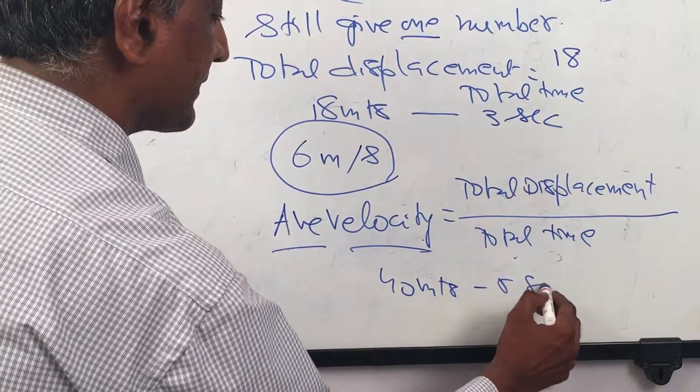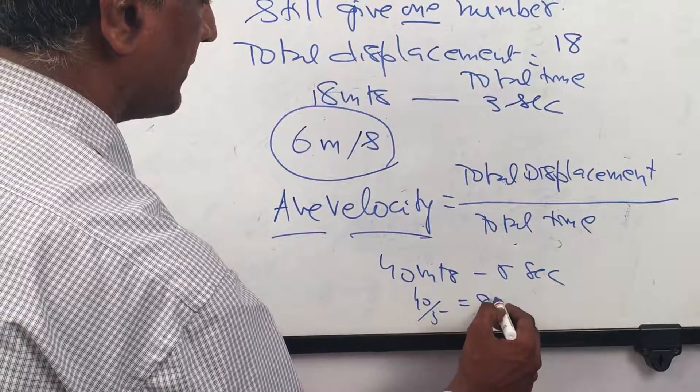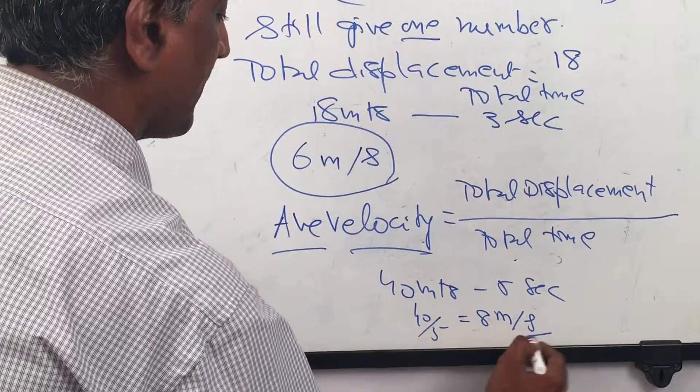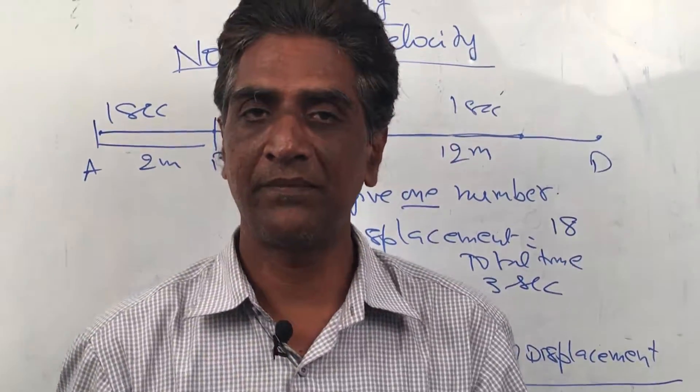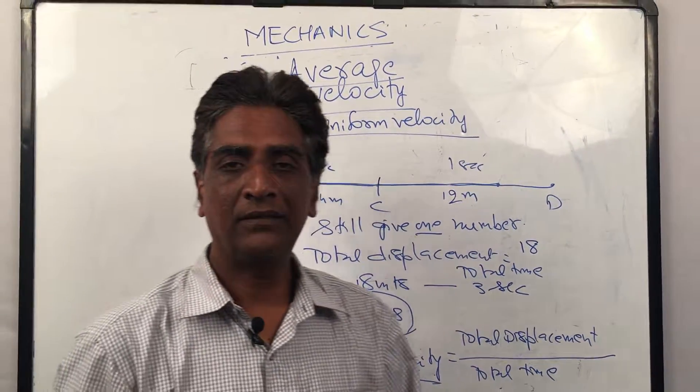Average velocity is total displacement by total time. So the total displacement was 40 meters in, let's say, 5 seconds, then the average velocity will be 40 divided by 5, which is 8 meters per second. The units are the same.